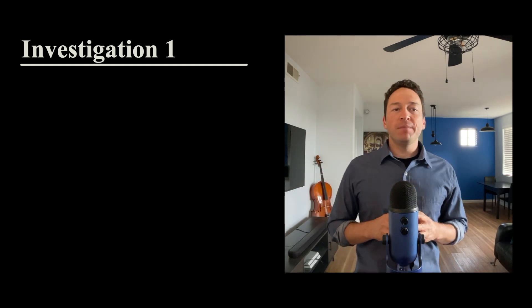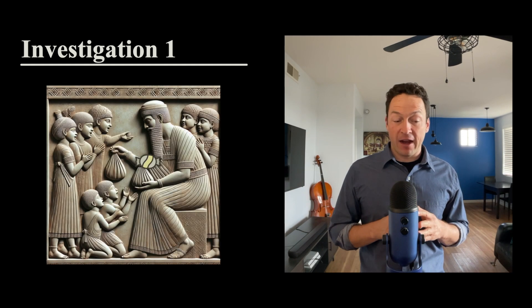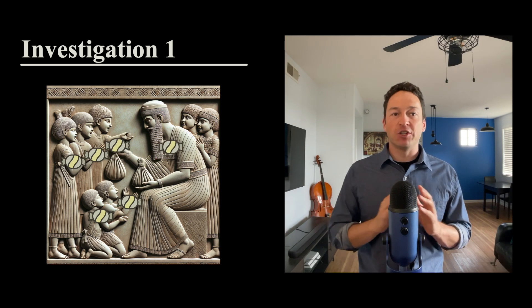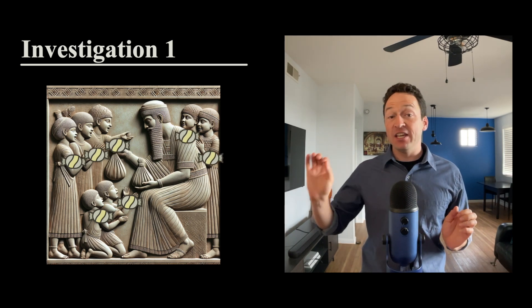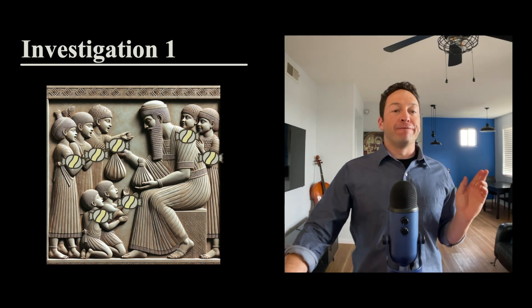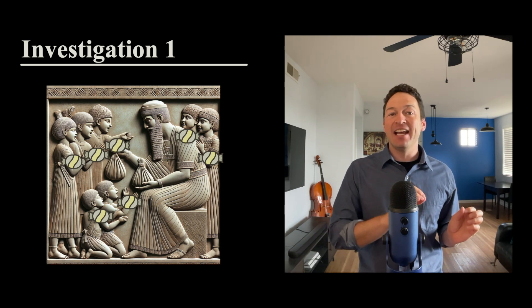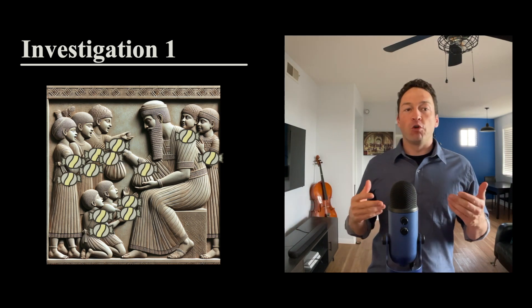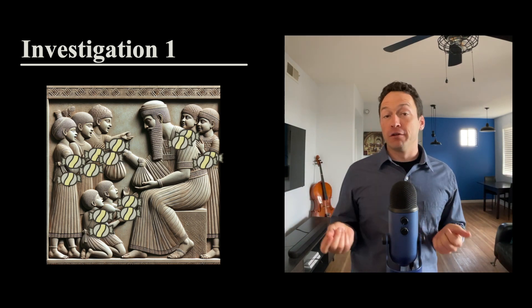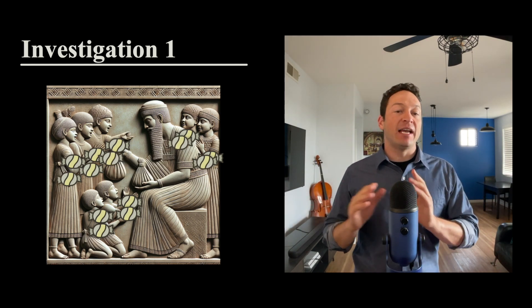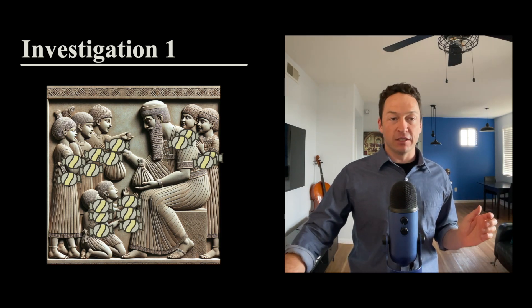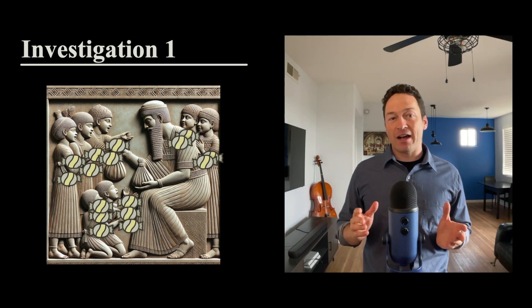Investigation one. Rom decided that he could be fair if he doled the candies out one at a time. He made sure to give the candies in order every single time. The first child not receiving a second candy until every single child got at least one, and of course, the first child doesn't get a third candy until every child has received two.